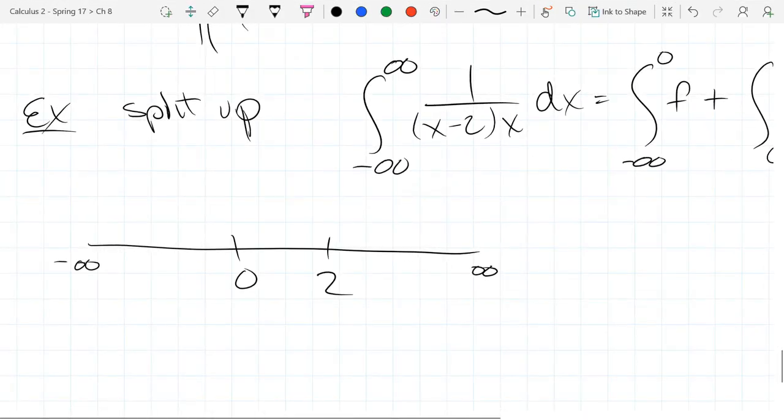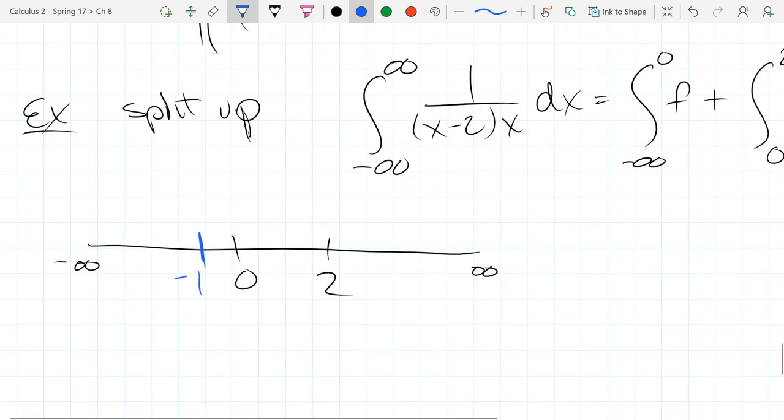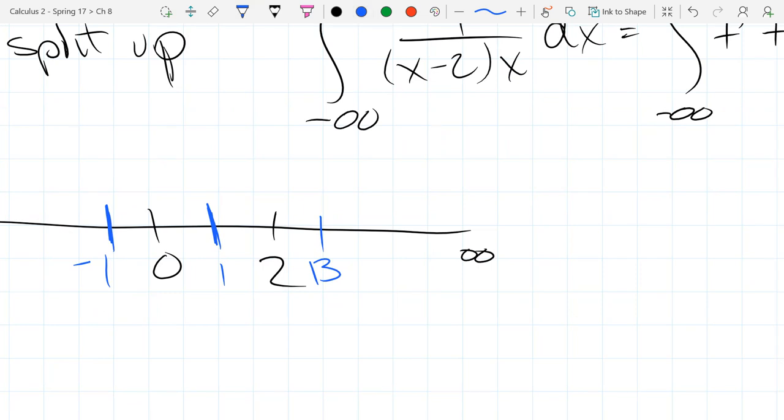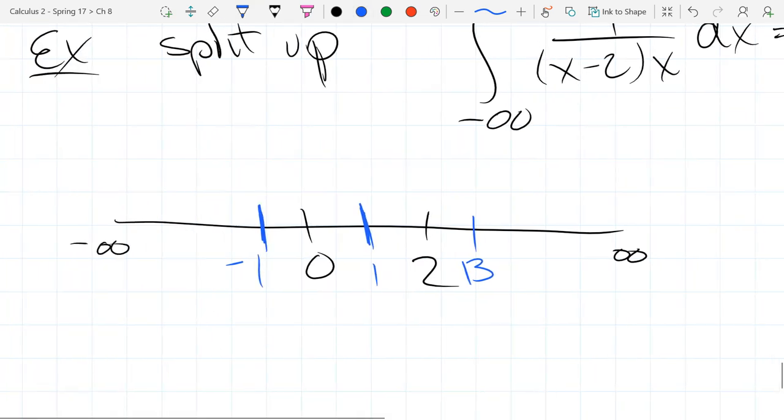So I'm going to write on our number line. These are the choices we're making. We're choosing to split at negative one. And zero and two are also values I have to be careful at, so I need to split also at positive one. And I also need to split between two and infinity. So we'll go and split at three. Or 16. How about 13? That's a good number.